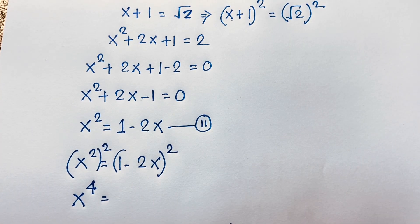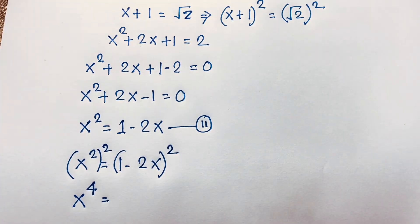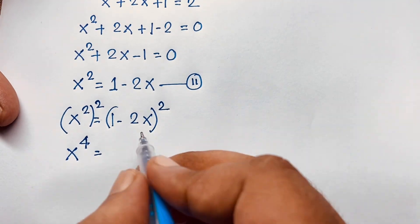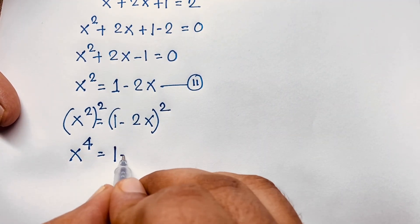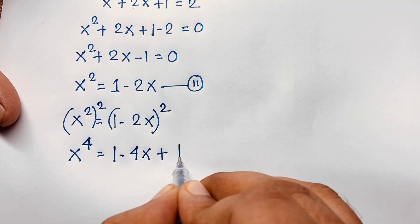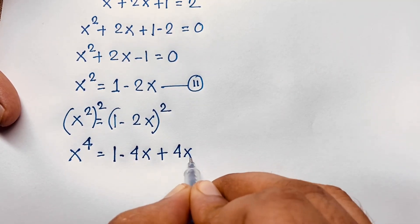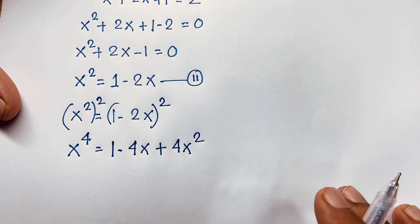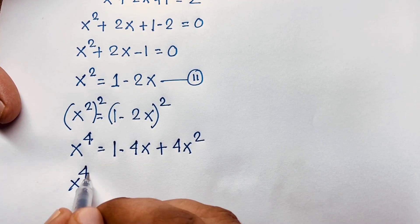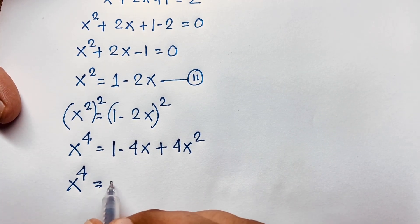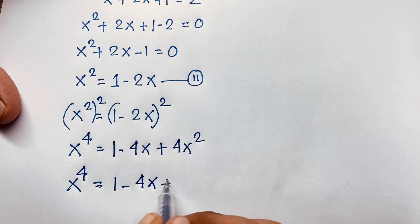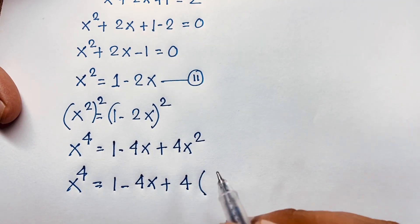Applying the formula (a minus b)² = a² minus 2ab plus b², the expansion of (1 minus 2x)² gives 1 minus 4x plus 4x². So x^4 equals 1 minus 4x plus 4x².